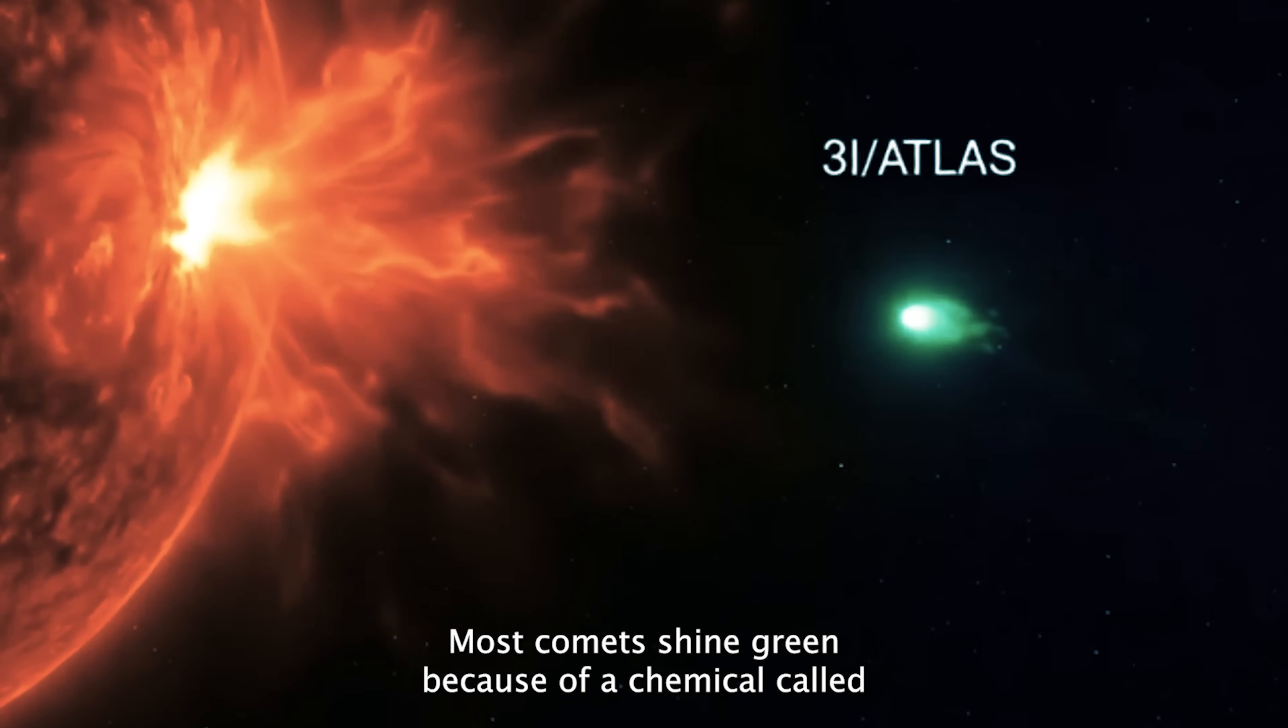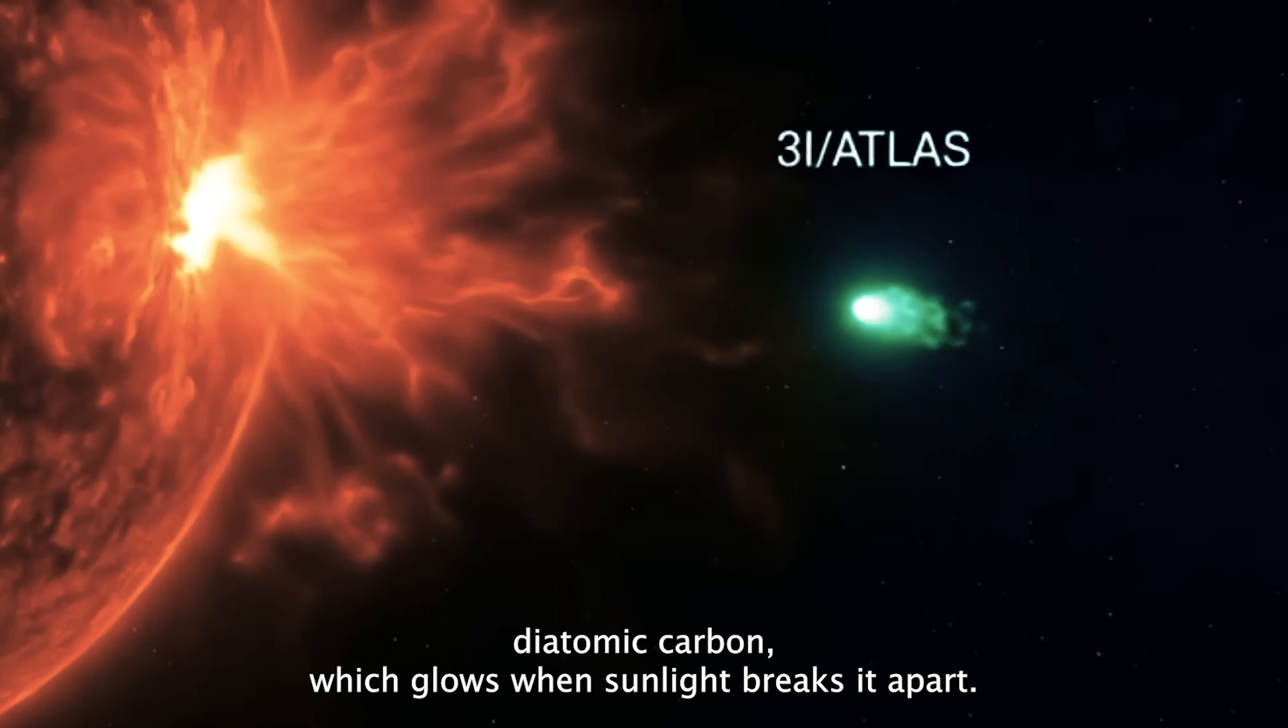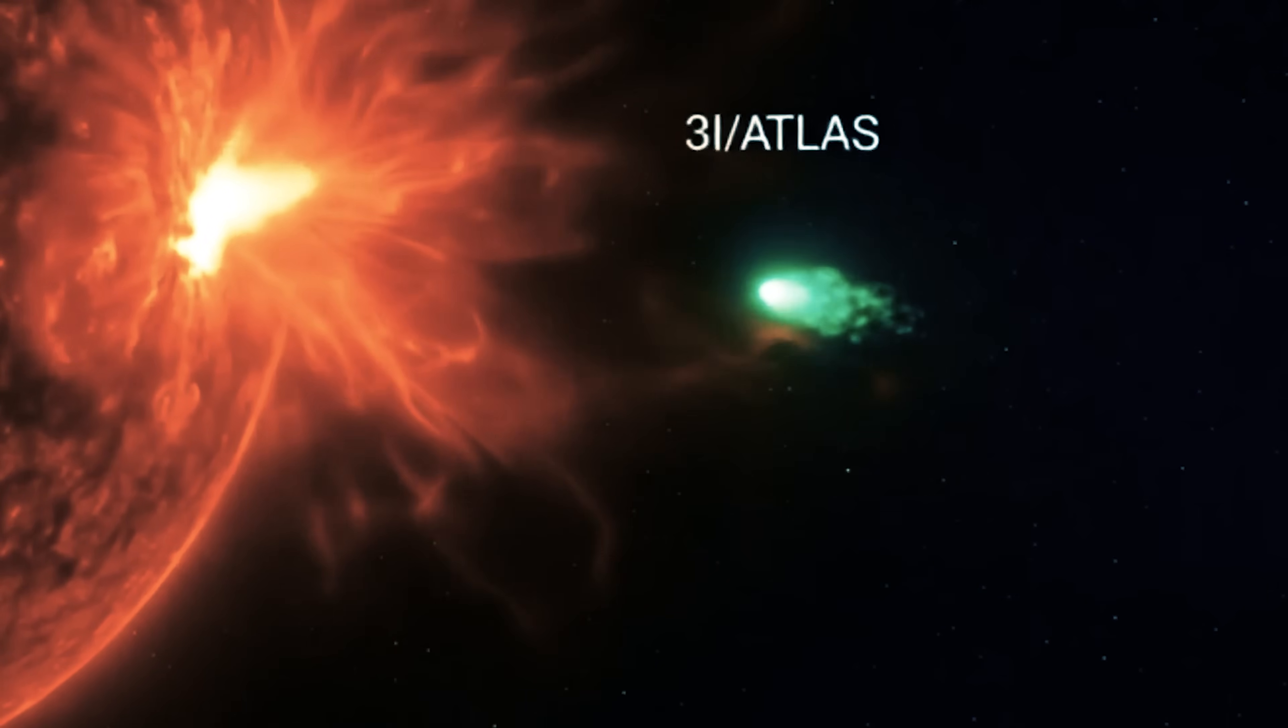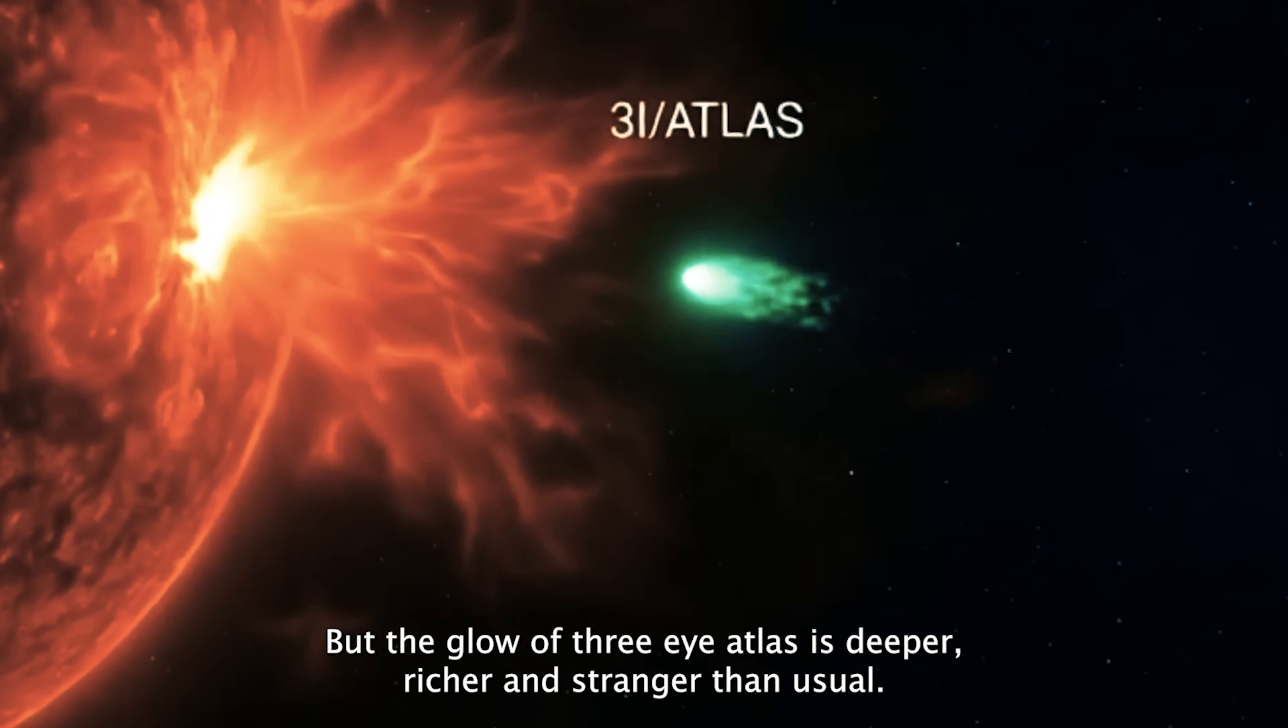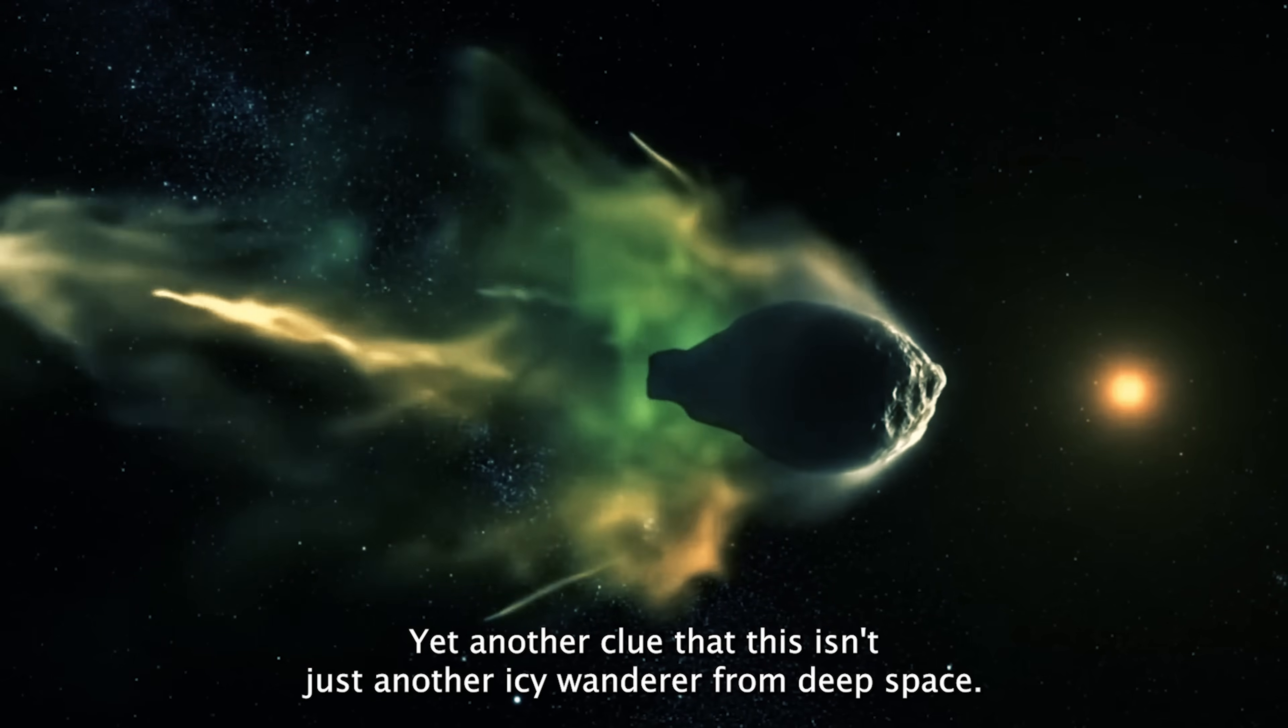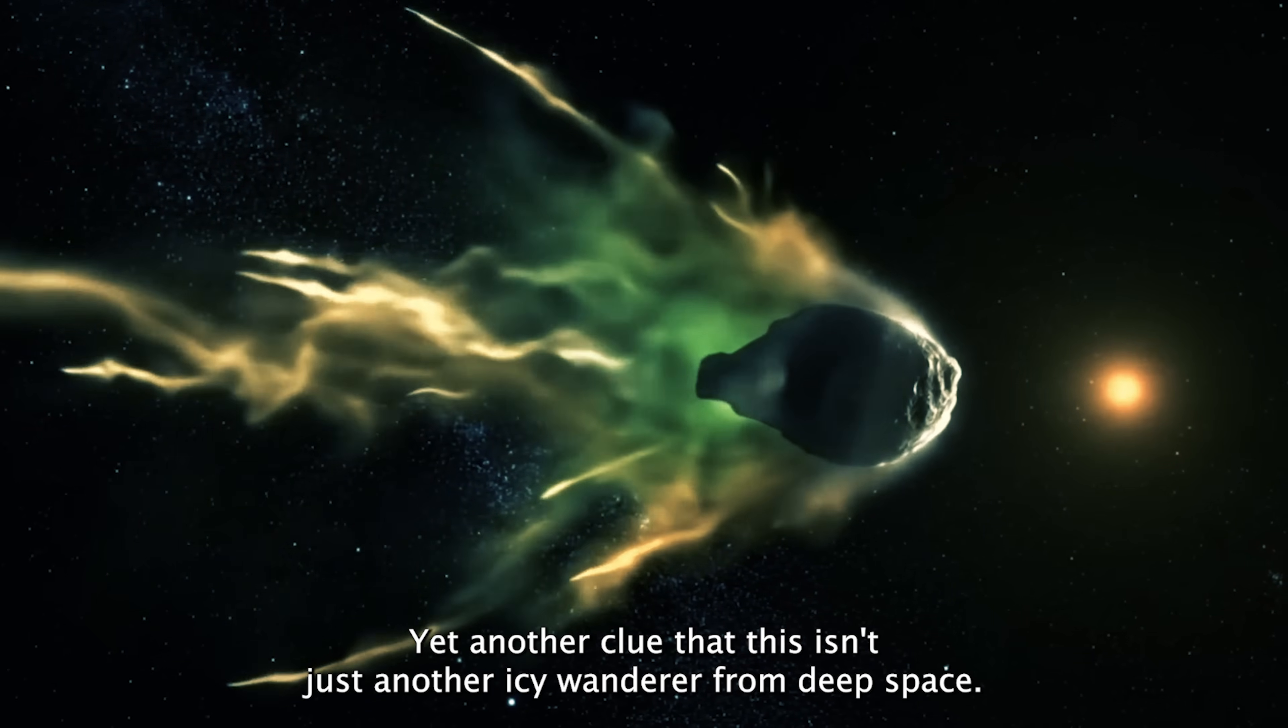And then there's the eerie green glow. Most comets shine green because of a chemical called diatomic carbon, which glows when sunlight breaks it apart. But the glow of 3i Atlas is deeper, richer, and stranger than usual, yet another clue that this isn't just another icy wanderer from deep space.